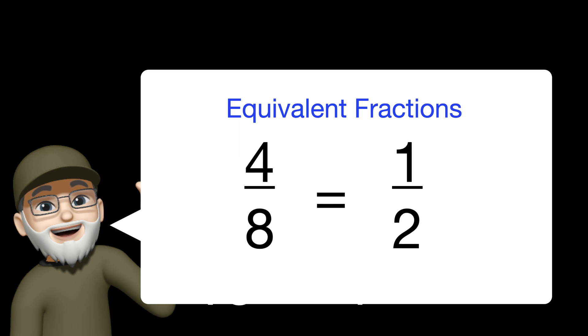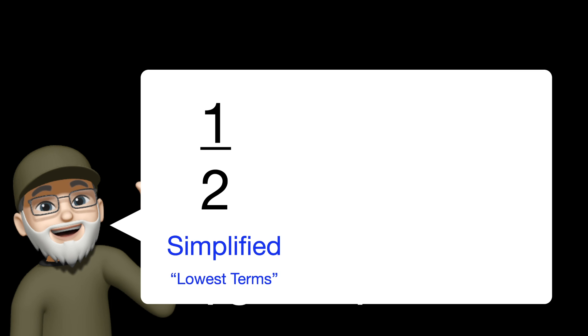But 4 eighths and one half are still equivalent. They're still equal. But the one half is the simplified fraction because it's in the lowest terms. How we do that today is use the greatest common factor, or the GCF.